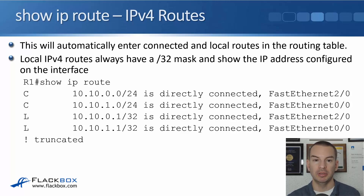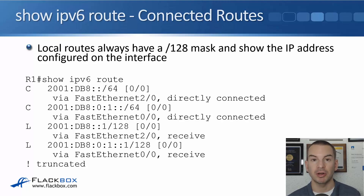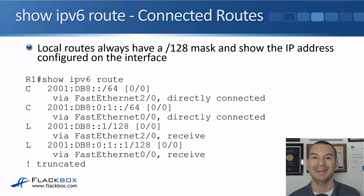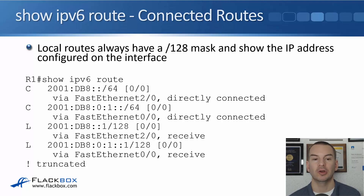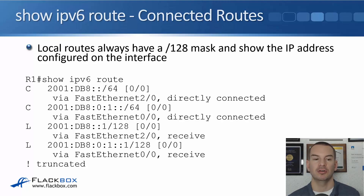To see the IPv6 routing table, the command is 'show ipv6 route', and we'll have similar entries. There are two connected routes matching the IPv6 addresses configured, and two local routes as well. IPv6 uses a 128-bit address, so local routes show up as /128. The connected route for 2001:DB8::/64 is on FastEthernet 2/0, and 2001:DB8:0:1::/64 is on FastEthernet 0/0, with the /128 local routes also visible.